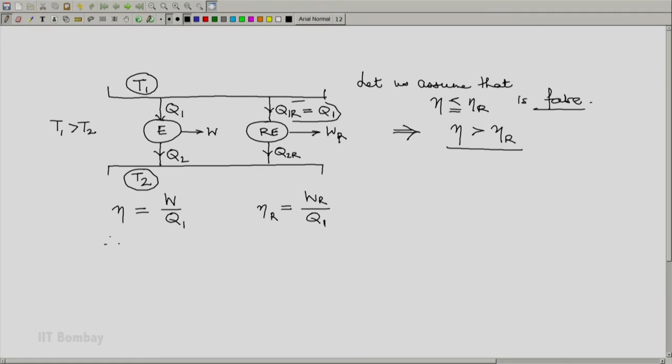Now since η is greater than ηr, here denominators Q1 are the same. Since η is greater than ηr, we have this work interaction must be higher than this work interaction, W greater than WR.